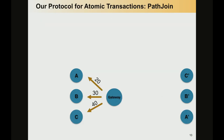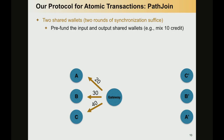Our protocol is called PathJoin and allows atomic transactions. Our main idea is that we need only two shared wallets, requiring two rounds of synchronization. In the first round, we create the two shared wallets and pre-fund them. Imagine an example in which we want to mix 10 credits — we will first create the input shared wallet and pre-fund it with 10 credits from each of the input wallets.